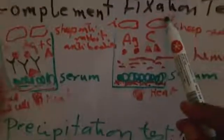Since the complement here is consumed by these immune complexes, red blood cells will settle down and no lysis occurs. However, if the patient serum does not contain specific antibodies, when we add antigens and then complement, both of them are free because there are no antibodies.